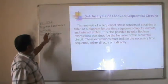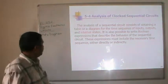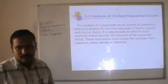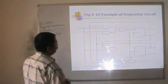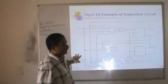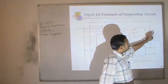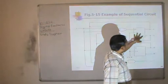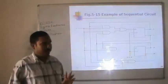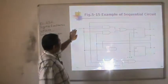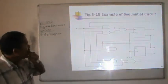Hello everyone, this is EC252 Digital Electronic Circuits lecture. Today we will see how a state diagram is used. One circuit is given, and we will first look at the state of the flip-flops. We can see there are two flip-flops here.